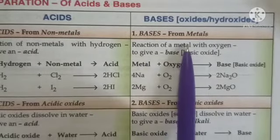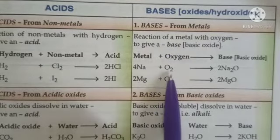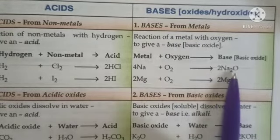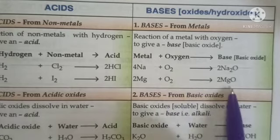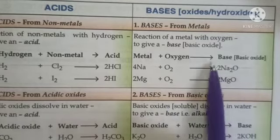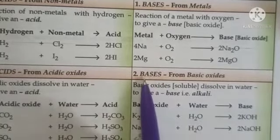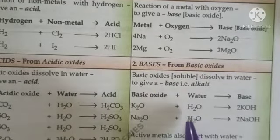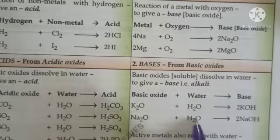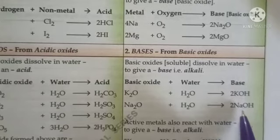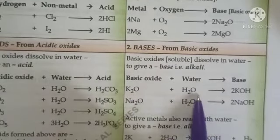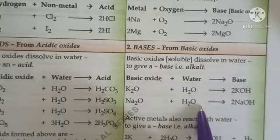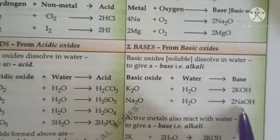Bases can be prepared from metals. When metals react with oxygen, they naturally form basic oxides. For example, sodium reacts with oxygen to form sodium oxide, and magnesium reacts with oxygen to form magnesium oxide. When these basic oxides are soluble in water and dissolve in it, they give a base or alkali. For example, potassium oxide dissolved in water gives potassium hydroxide, and sodium oxide dissolved in water gives sodium hydroxide.